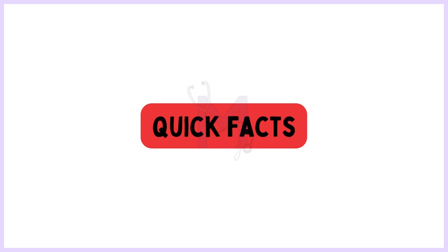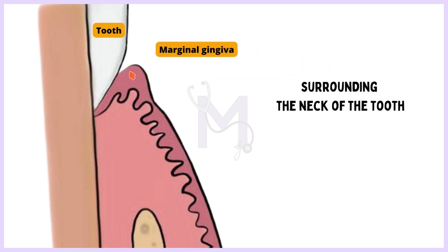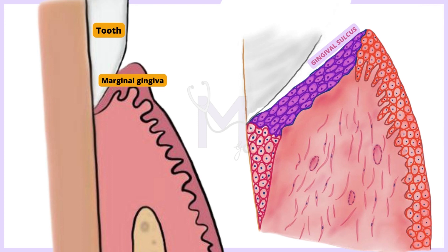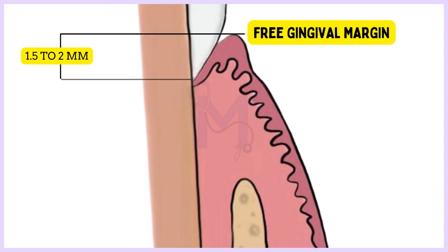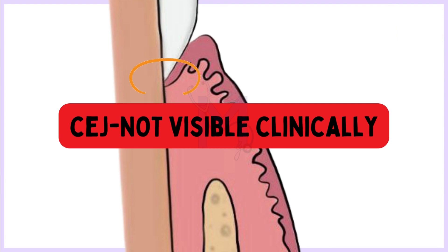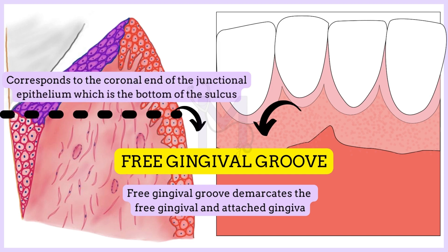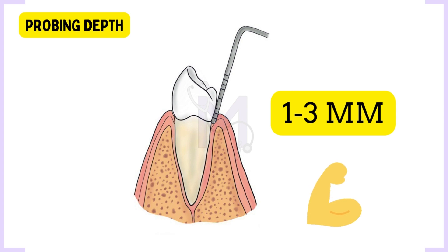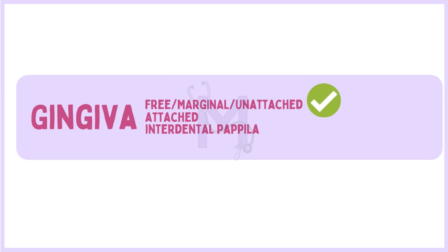Now that we are clear with the basics, let me throw some quick facts. Marginal gingiva, also called the free gingiva, is the portion of the gingiva surrounding the neck of the tooth that forms the soft tissue wall of the gingival sulcus. After complete tooth eruption, the free gingival margin is located on the enamel surface approximately 1.5–2 mm coronal to the cemento-enamel junction, the CEJ. That's exactly why the CEJ is not visible clinically in a healthy gingiva. It is demarcated from the attached gingiva by the free gingival groove, and it corresponds with the coronal margin of the junctional epithelium, which is basically the bottom of the sulcus. A probing depth of 1–3 mm is usually considered compatible with gingival health; thus, up to 3 mm sulcus depth is considered normal in a clinical scenario.